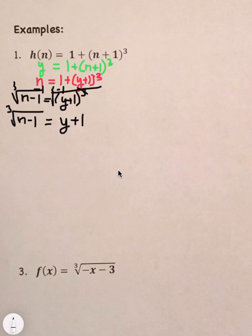And so, then all we have to do is subtract 1 from both sides. So, we get the cube root of n minus 1 and then minus 1 equals y.